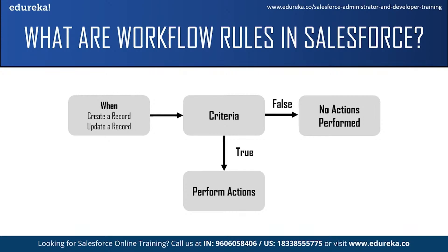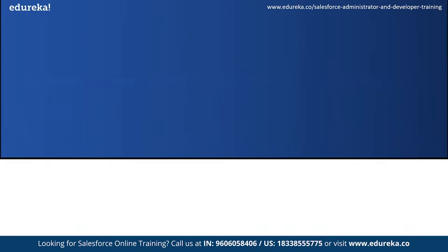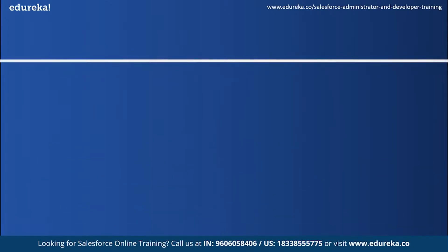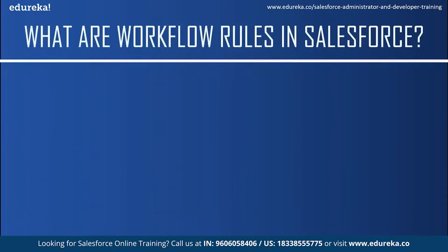Objects in Salesforce are like leads, accounts, opportunities, contacts, or any other custom object. Fields are basically the columns in the table that tell us about what is stored in the records, and records are the rows or any entry in the table — this is the information of an individual.